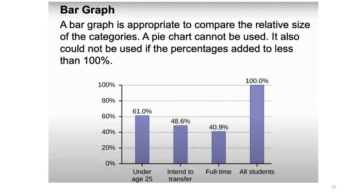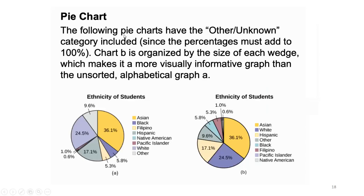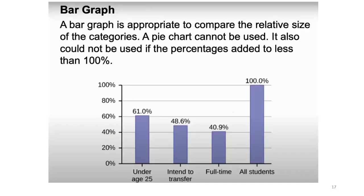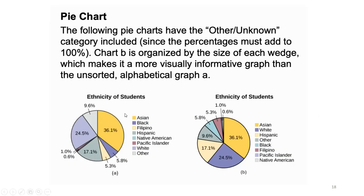Another example of a pie chart: the following pie charts have an 'other/unknown' category included since the percentages must add to 100%. Chart B is organized by size of each wedge, which makes it a more visually informative graph than the unsorted alphabetical Chart A. The graphs are arranged in descending order — 61, 48, 40 — and you can see that 36.1% of Asians appears in both charts.